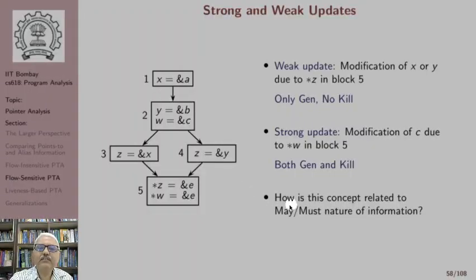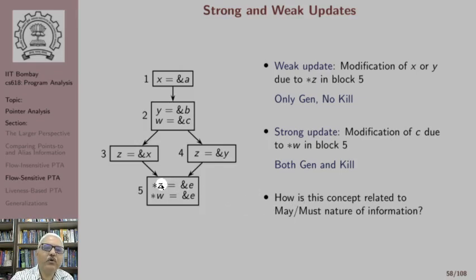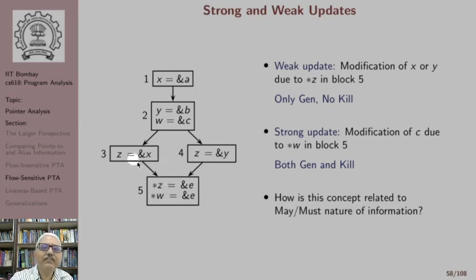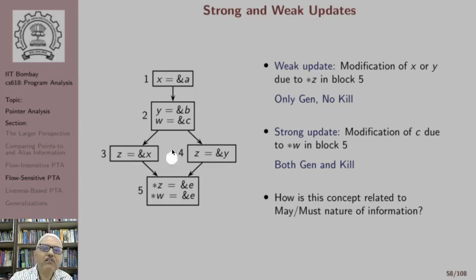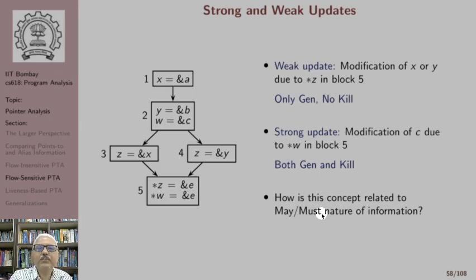This concept is related to the may/must nature of information — specifically the may/must nature of the pointee of z. Along one path z points to x, whereas along the other path z points to y, so this is may points-to information. However, w continues to point to c along both paths, so it is must points-to information.